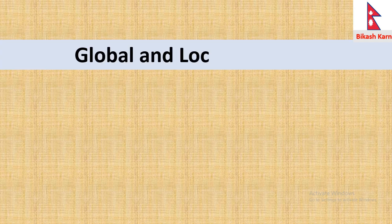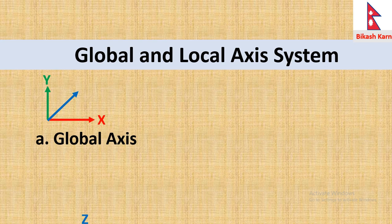Global and local axis system. Global axis system has x, y, and z axis, where z is the out of plane axis and the former two are in plane axis. The global axis system is always fixed.